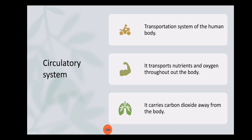What is the circulatory system? It is basically the transportation system of the human body. In our body, this system is used to transport materials and goods throughout our body where they are needed.